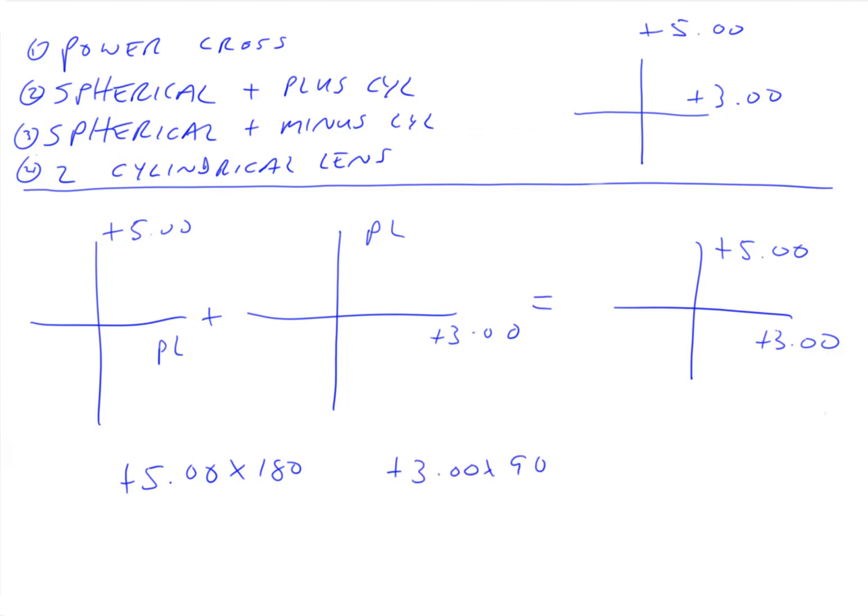What we end up with is two cylindrical lenses. This one is plus five axis 180, and this one is plus three axis 90. The way you kind of write it is like this—there's no great notation, but this is kind of the standard. If we hold those two cylindrical lenses up together we get that. So this is another way we can build this toric system using just cylindrical lenses.